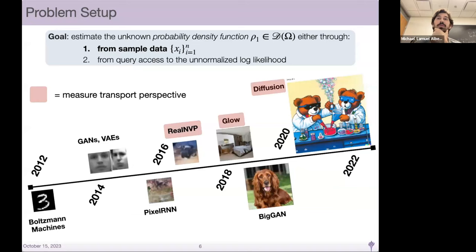The underlying idea behind all this recent success is the measure transport perspective. We have some density and endow some parametric transformation of samples to those densities to sample under a new density, given some conservation laws.